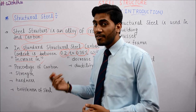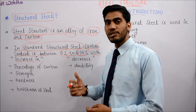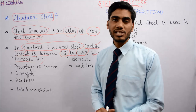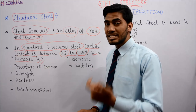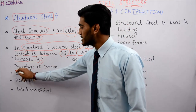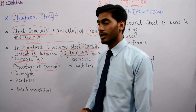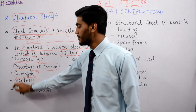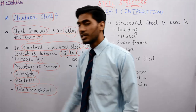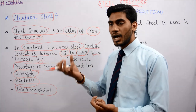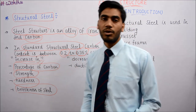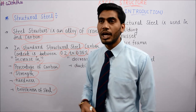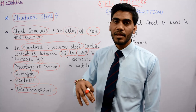Now let us understand what changes happen when the carbon content value increases. With an increase in the percentage of carbon: the strength of steel increases, the hardness of steel increases, and the brittleness of steel increases. Brittle property means sudden failure without warning - for example, if brittle steel is used in a slab and a load is applied, it will suddenly fail, which can cause accidents.